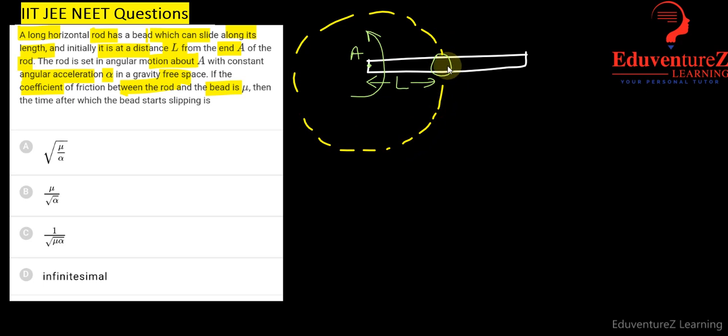The bead will experience a centrifugal force outward which is M omega square R, and the radius is L, so we can write M omega square L. Friction acts towards the center as centripetal force and tries to stop the bead from slipping.